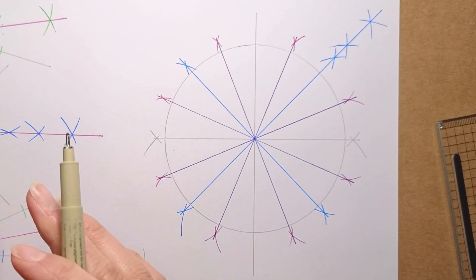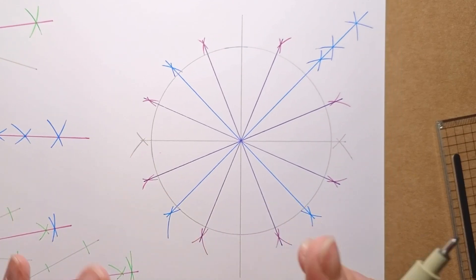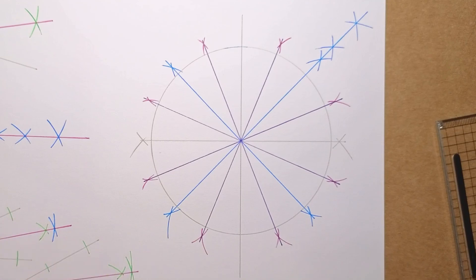So you see how using the bisector you can go from any division of the circle and just multiply it by two. So if you know how to divide in six, and you know the bisector, then you know how to divide in twelve, in twenty-four, in forty-eight, et cetera. We've done four, eight, and sixteen. It goes on.